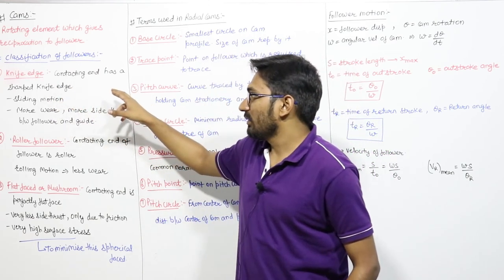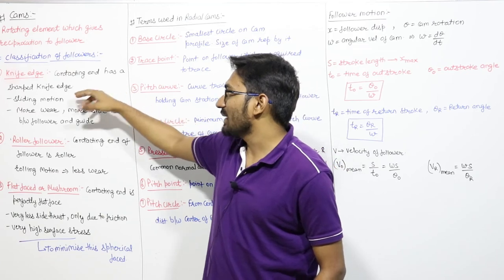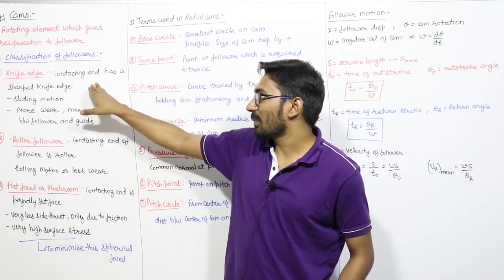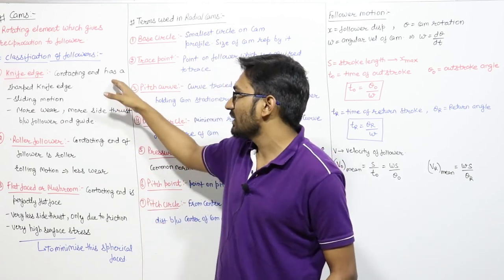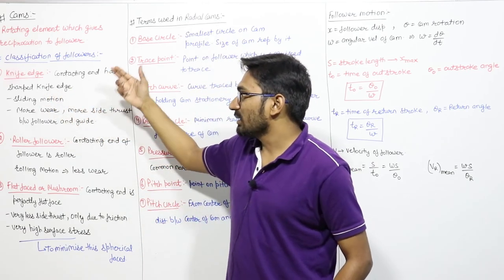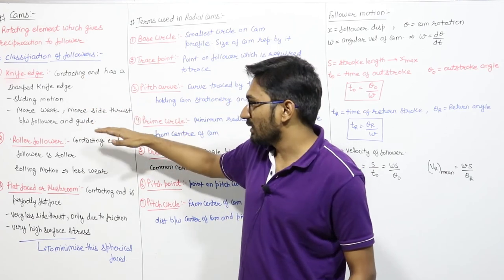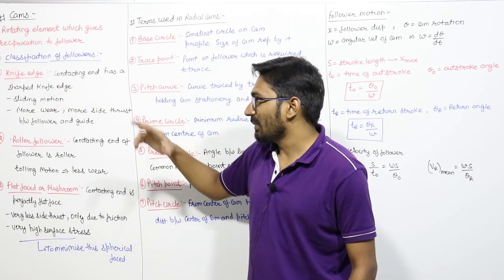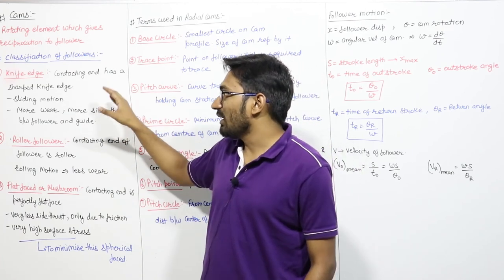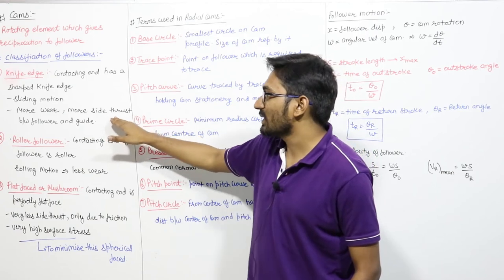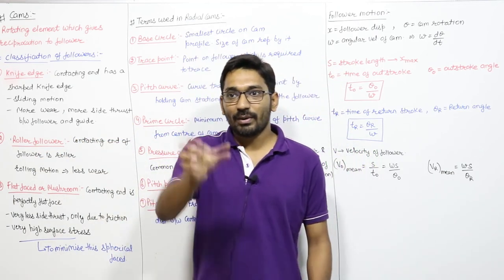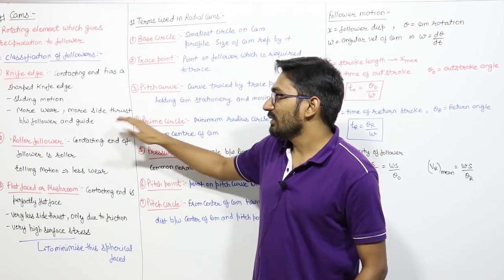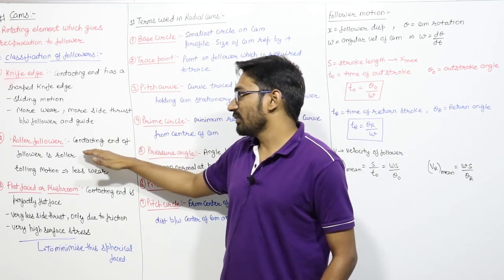The first type is the knife edge follower, in which the contacting end to the cam has a sharp knife edge. The major disadvantage is that there is more side thrust between the follower and the guide, since the follower reciprocates in the guide. This is a significant disadvantage. Next is the roller follower, in which the contacting end of the follower is a roller.